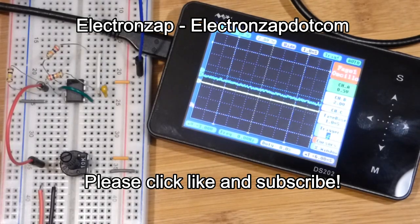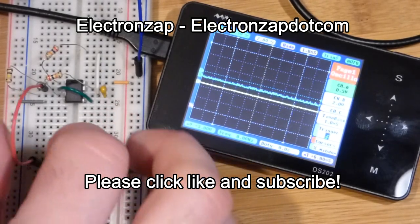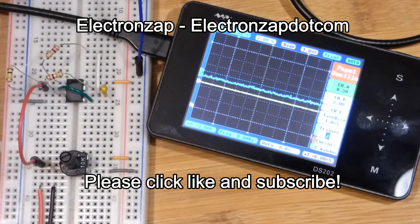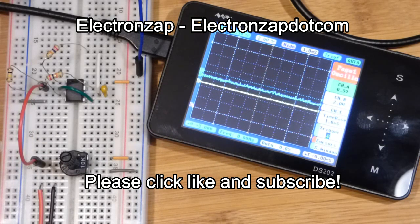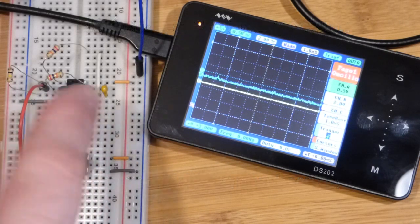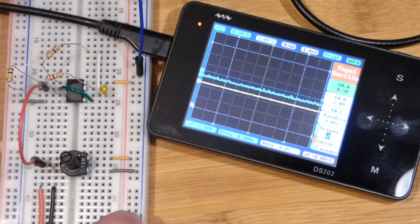Alright, so now in this video we're just going to take a quick look at this circuit. I looked up a triangle wave oscillator, and this was the circuit that I came across.